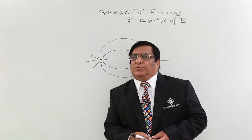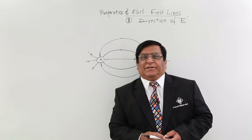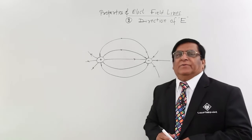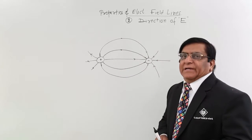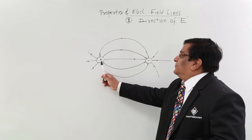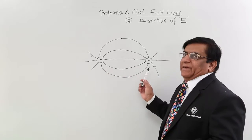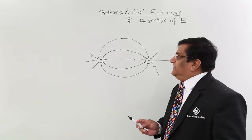Now we will see how to check the direction of electric field with help of electric field lines. If this is representation of electric field lines at any place, these two are the charges plus and minus. There may be any type of charges.